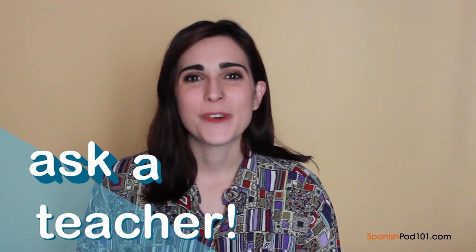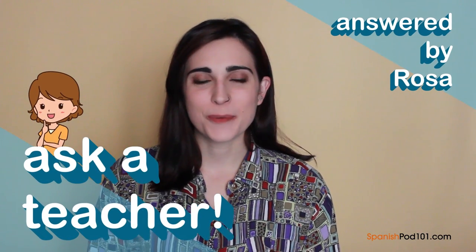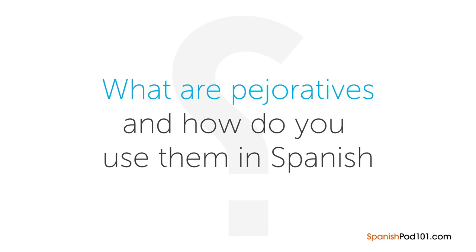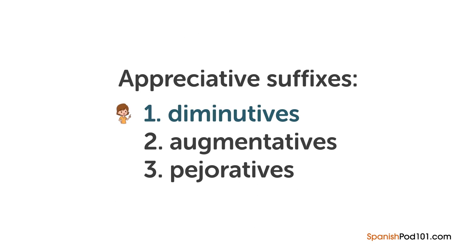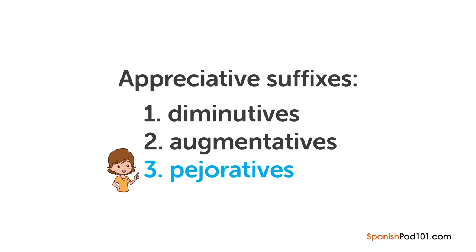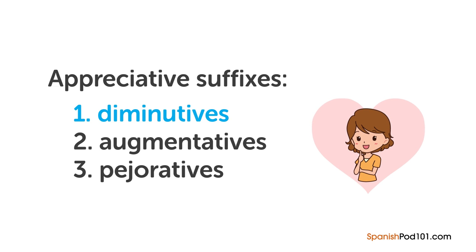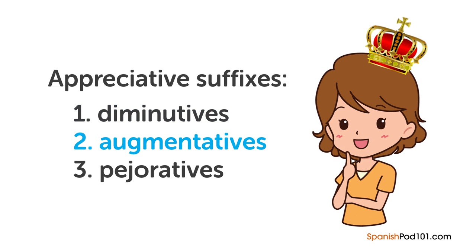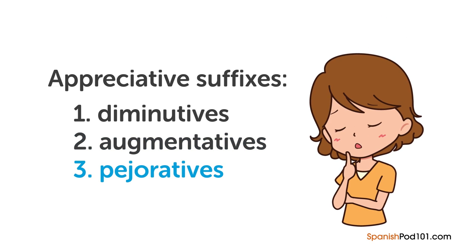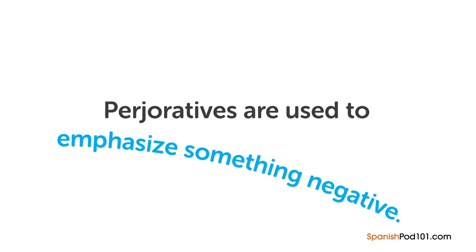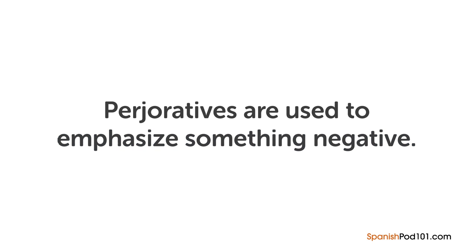Hi everybody, Rosa here. Welcome to Ask a Teacher, where I'll answer some of your most common Spanish questions. The question for this lesson is: what are pejoratives and how do you use them in Spanish? Diminutives make something smaller or affectionate, and augmentatives make something bigger or important — so what do pejoratives do? Pejoratives are used to emphasize something negative.